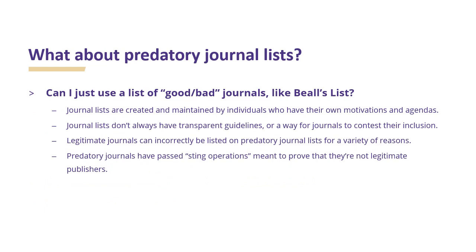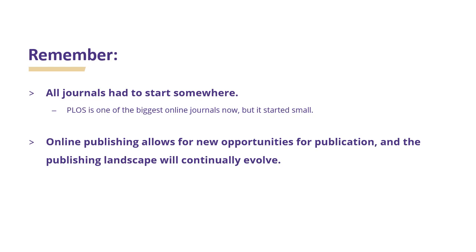What about predatory journal lists? Can I just use a list of good or bad journals, like Beall's list? Journal lists are created and maintained by individuals who have their own motivations and agendas. Lists of journals don't always have transparent guidelines or a way for journals to contest their inclusion. Legitimate journals can incorrectly be listed on predatory journal lists for a variety of reasons. Predatory journals have also passed sting operations meant to prove that they're not legitimate publishers. Remember, all journals had to start somewhere — the Public Library of Science is one of the biggest online journals now, but it started small. Online publishing allows for new opportunities for publication, and the publishing landscape will continually evolve.